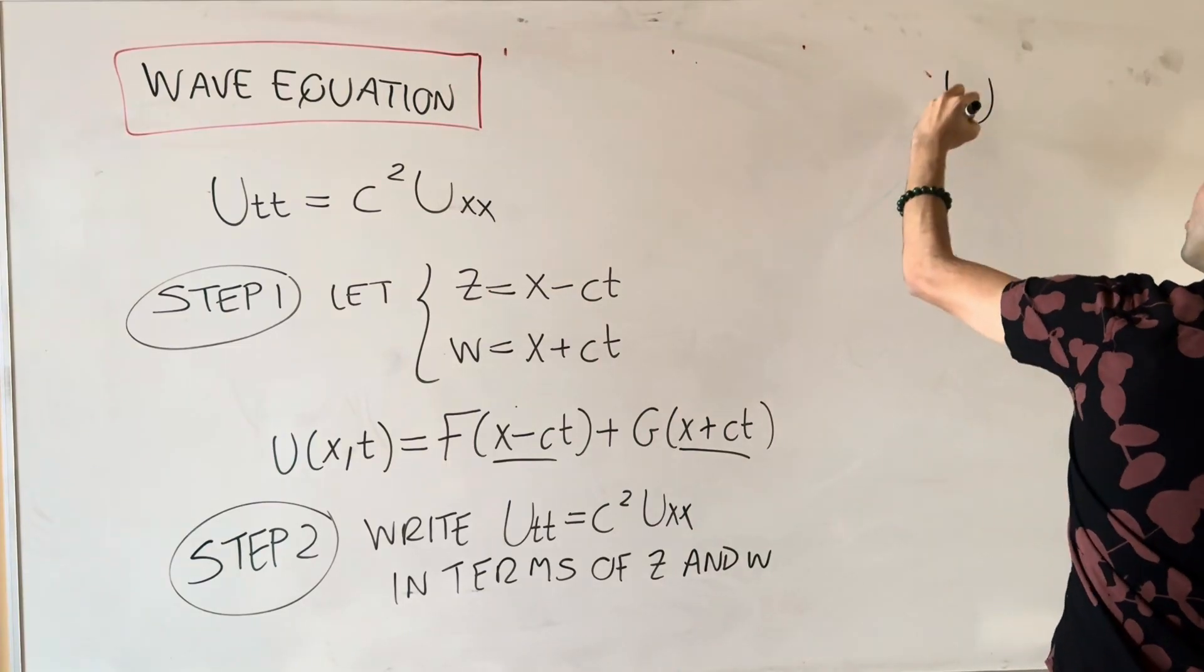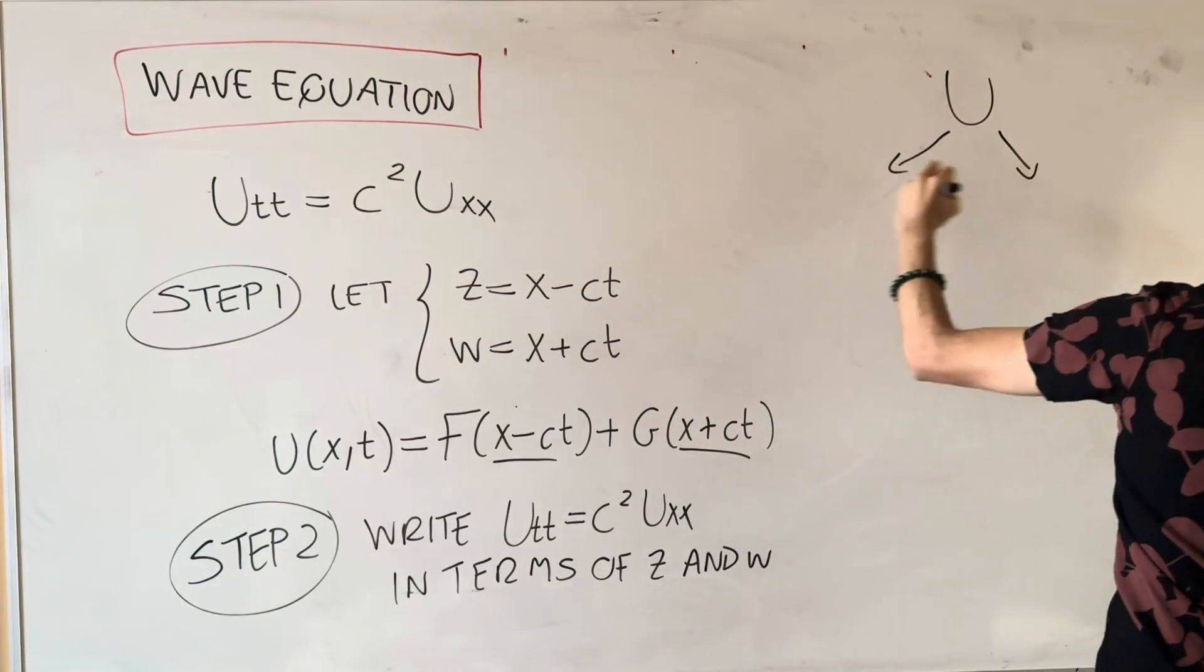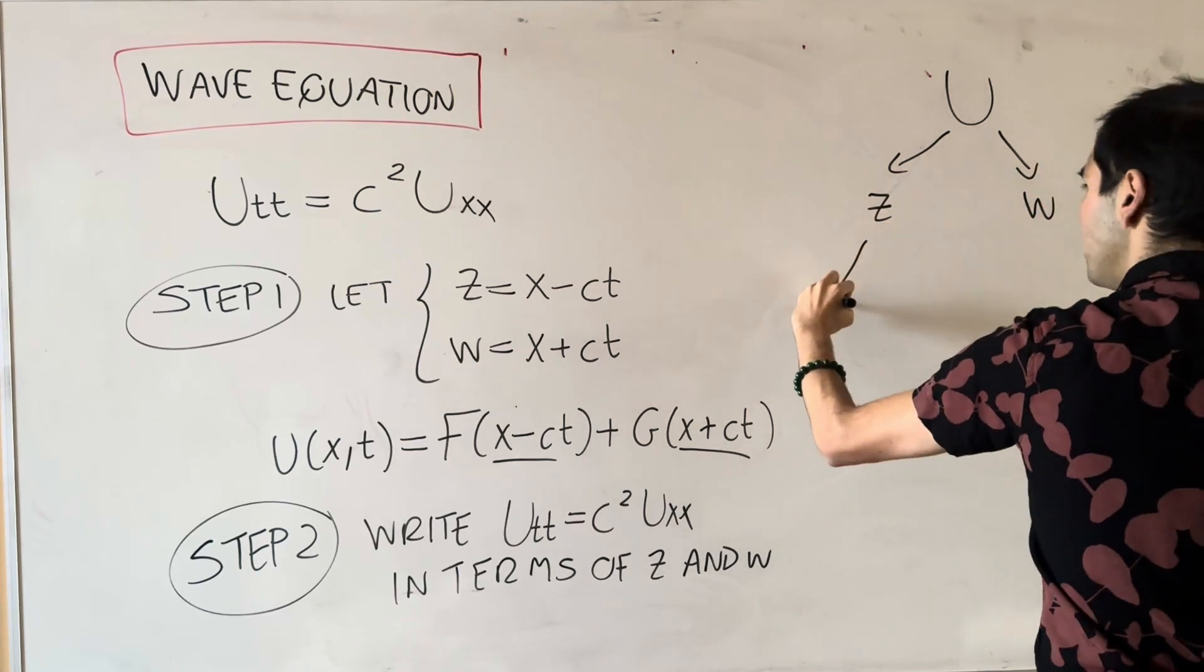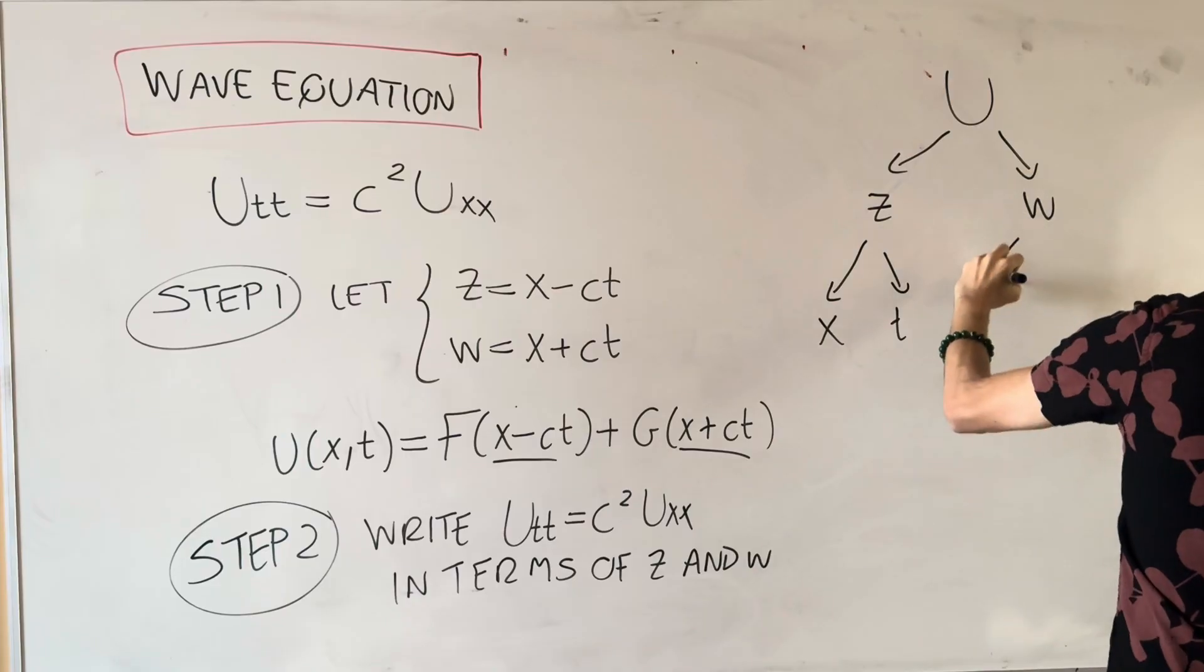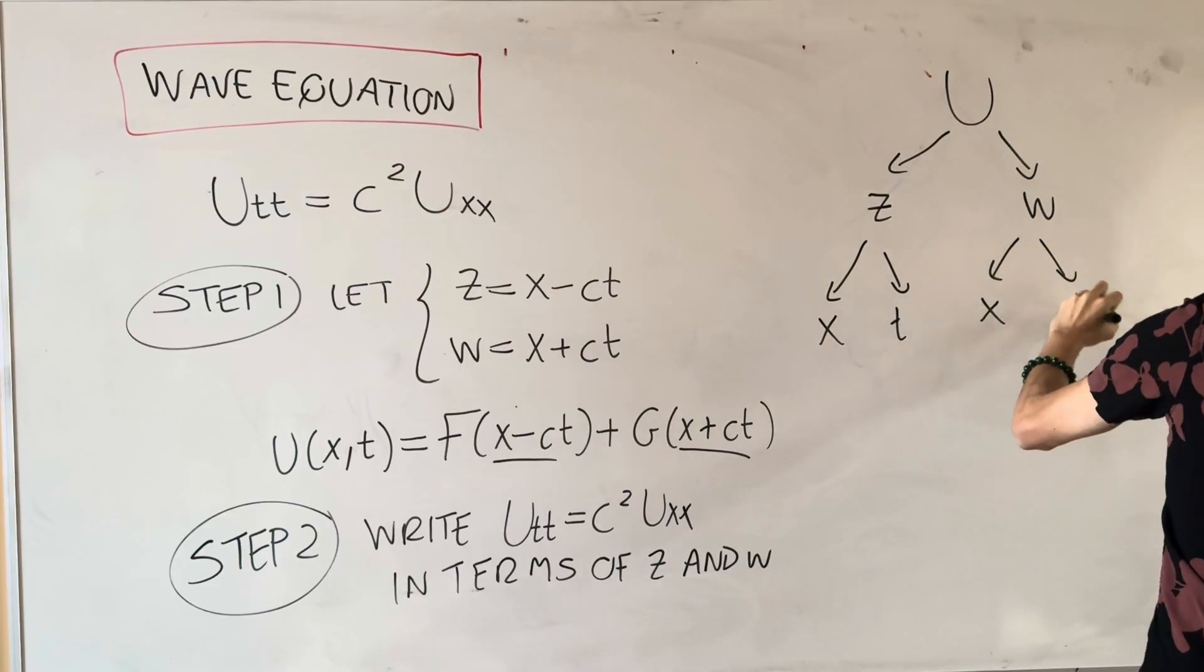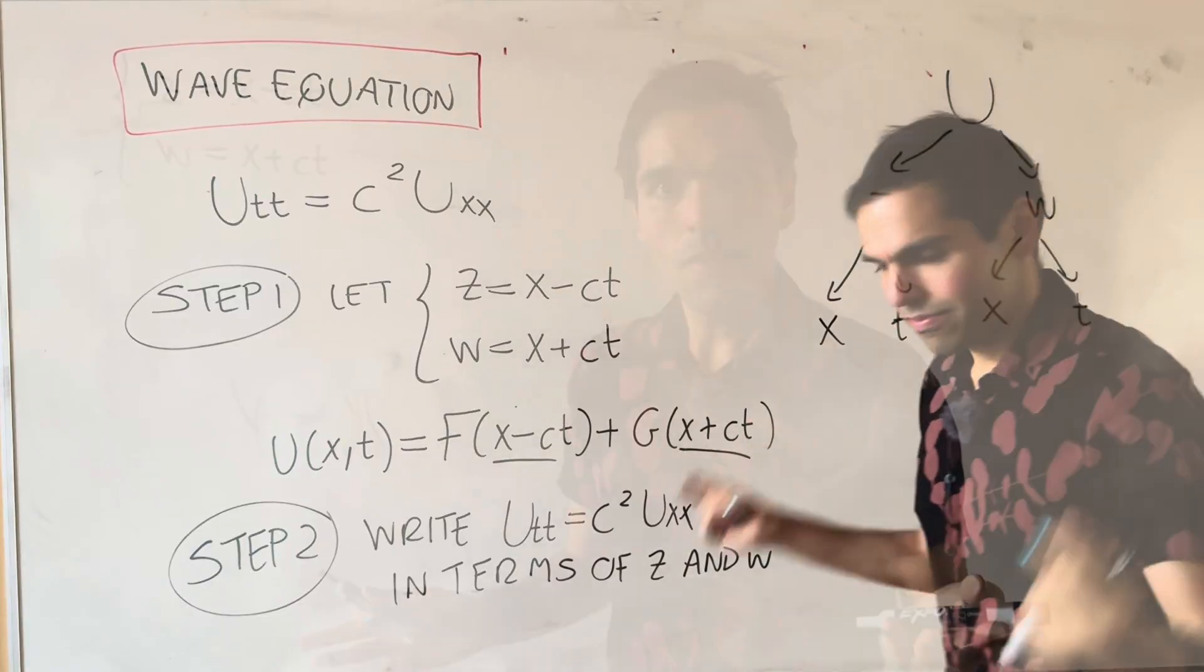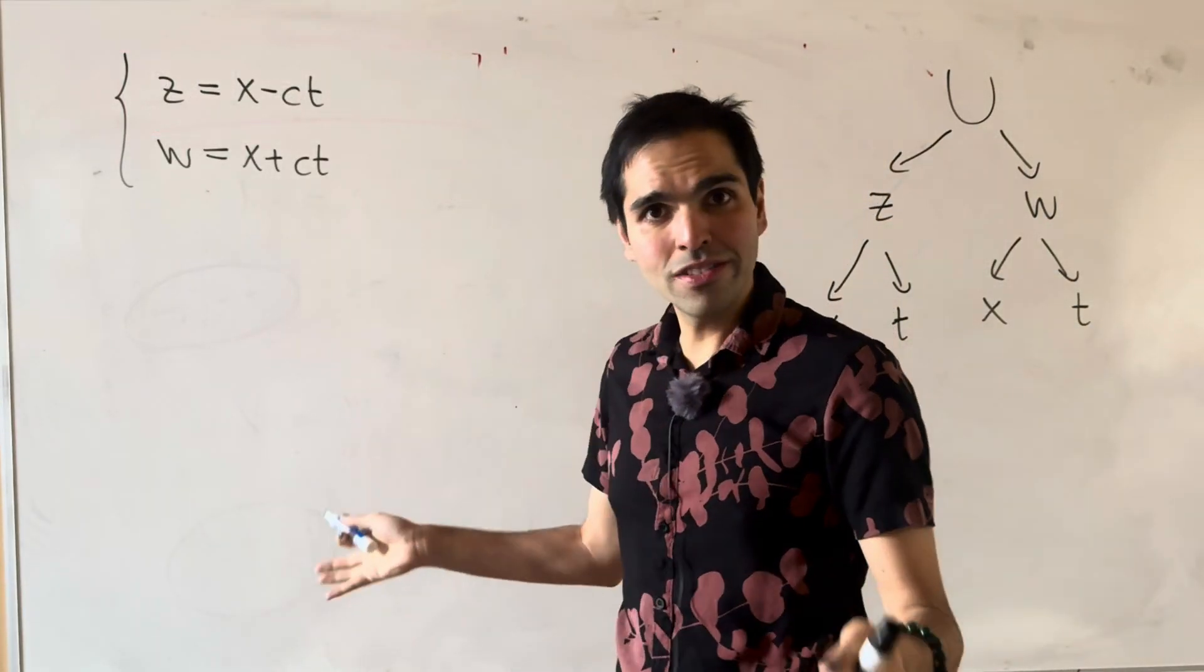And for this, remember the following chain rule diagram, which we'll use several times today. So u is a function of z and w, and z is a function of x and w. Very good. So now let's do it. Well, as I said, first things first.